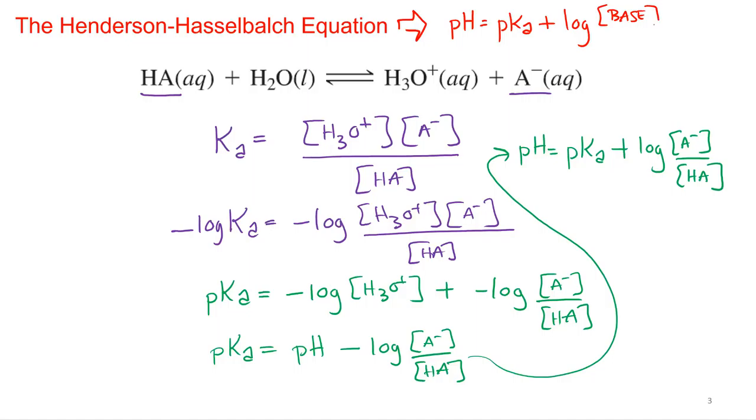So whatever your weak base in your buffer system is, all over the concentration of your acid. Now that really removes your ability to make that HA joke, but, you know, it's a little bit more transparent, a little bit more clear about what those concentrations are.